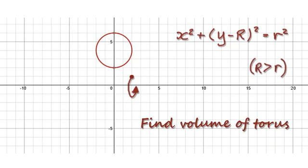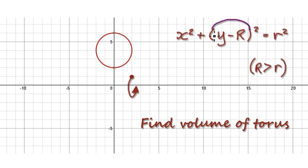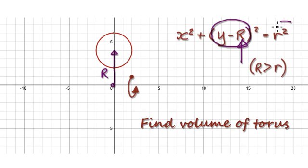Let's give you guys some more practice. The equation of this circle is given by this. Looking at the equation, this bit here tells you how much the circle has been shifted up by. The distance from here to the center of the circle is capital R. And this bit here tells you the radius of the circle, which is small r.